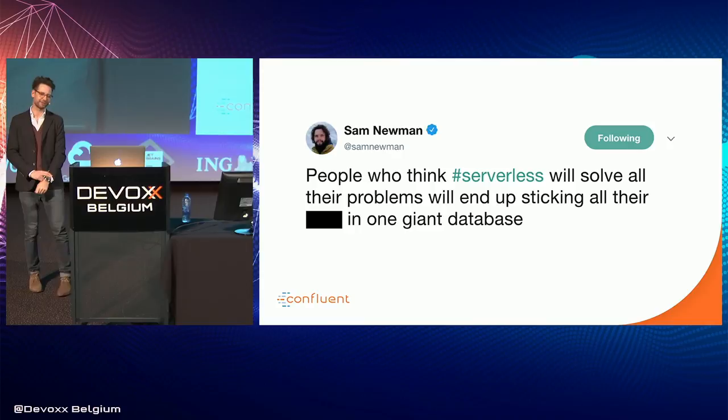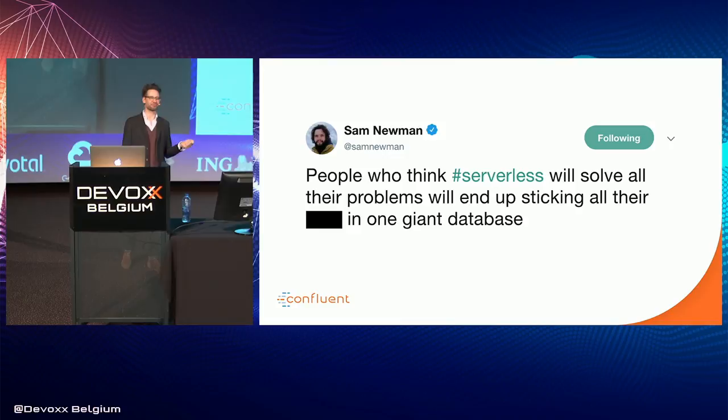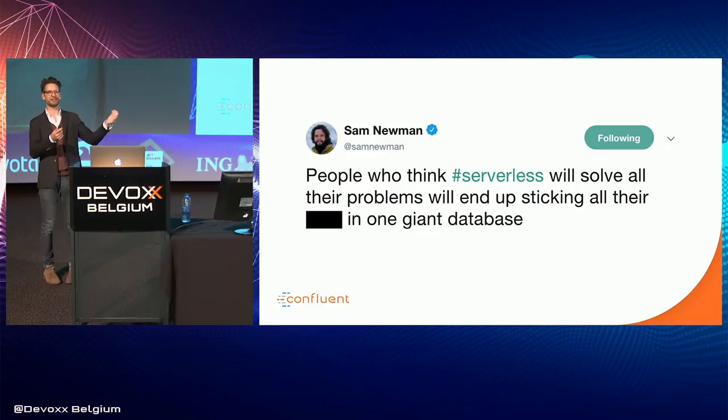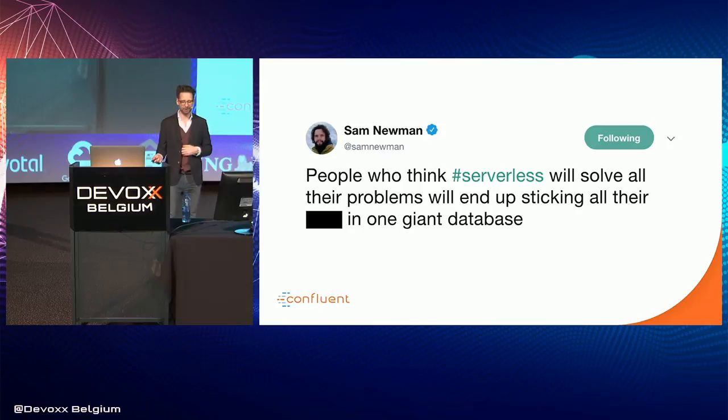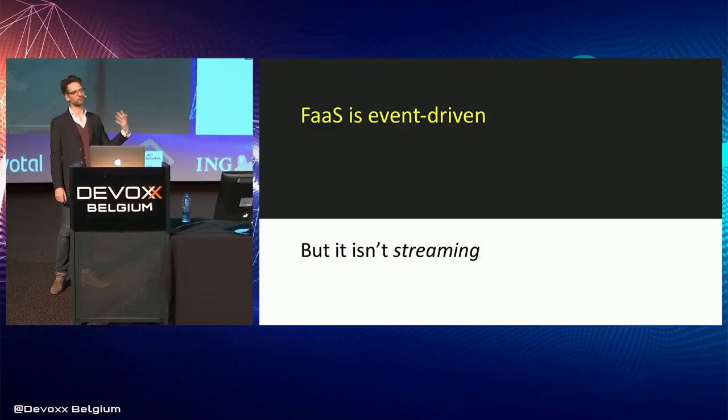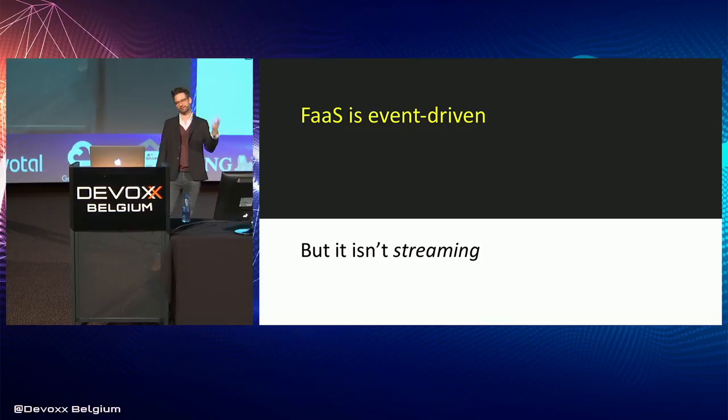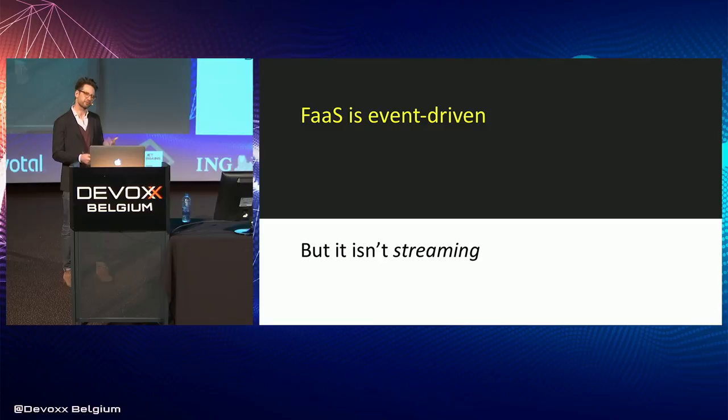Sam Newman, who wrote one of the books on microservices, commented that people who think serverless will solve all their problems will probably end up sticking all their stuff in one giant database. This is because in microservices, you tend to separate data into different databases for different microservices. This brings us to an interesting point: how do we actually deal with state in a system driven by events? FaaS is an event-driven concept — an event comes in and you trigger some processing — but it isn't strictly streaming. Streaming is slightly different.